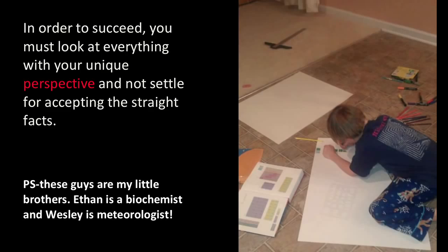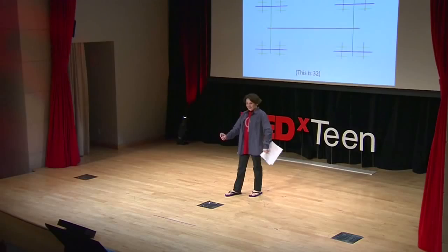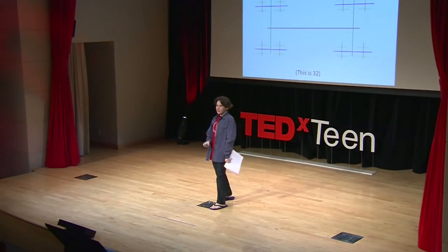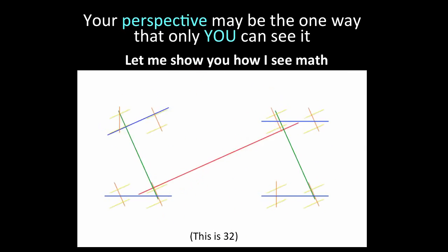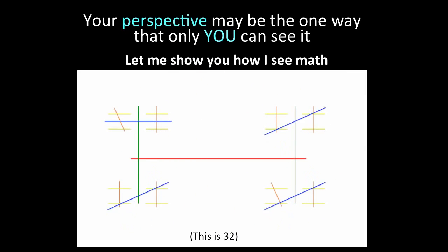By the way, the people I'm showing in the background are my little brothers, Ethan and Wesley. One of them is a chemist and the other one is a meteorologist. Your perspective might be the only way you can see art or history or music or whatever. Let me show you one of the ways in which I can see math. For example, that's 32 and the rotations represent addition, subtraction, division, multiplication, etc.